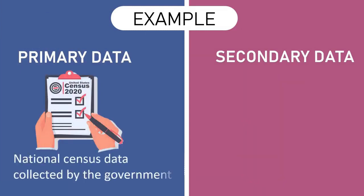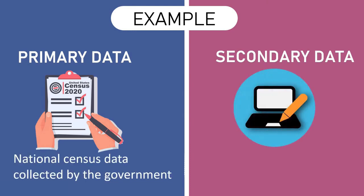An example of primary data is the national census data collected by the government, while an example of secondary data is the data collected from online sources.